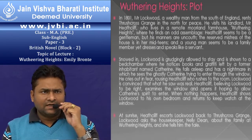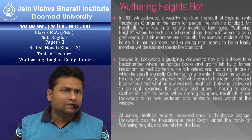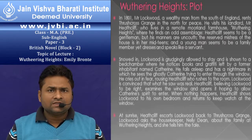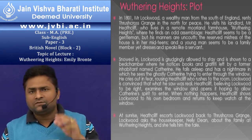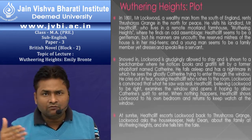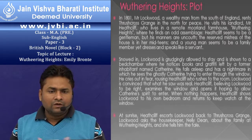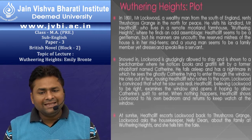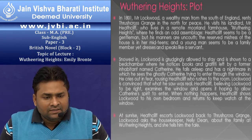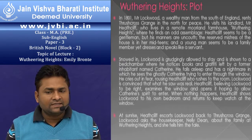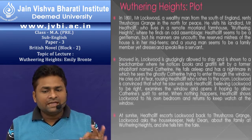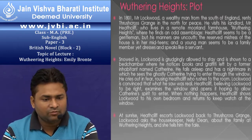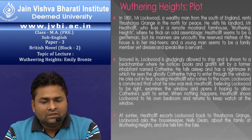Now we go for the plot of Wuthering Heights — what it is all about and how it became such an important novel in the history of English literature. In 1801, Mr. Lockwood, a wealthy man from the south of England, rents Thrushcross Grange in the north for peace. He visits his landlord, Mr. Heathcliff, who lives in a remote moorland farmhouse called Wuthering Heights, where he finds an old household. Heathcliff seems to be a gentleman, but his manners are uncouth.